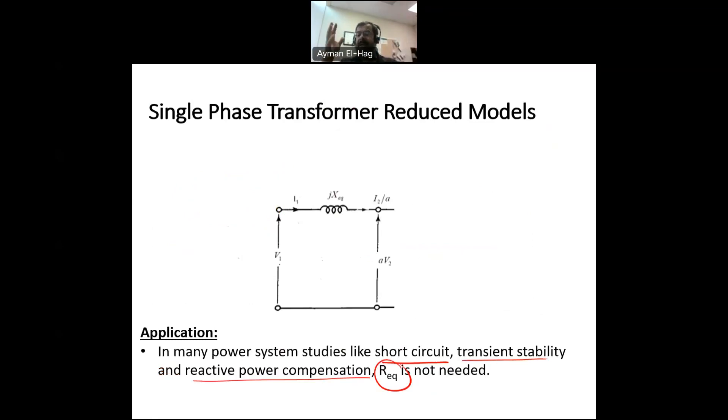So in conclusion, we have different models, starting from the exact to basically this simple model with just one equivalent inductor. And based on the studies, based on our interest, we can use these different models. Thank you.